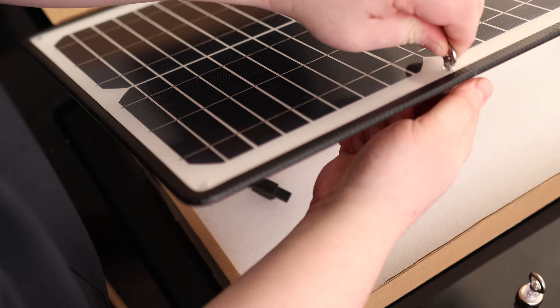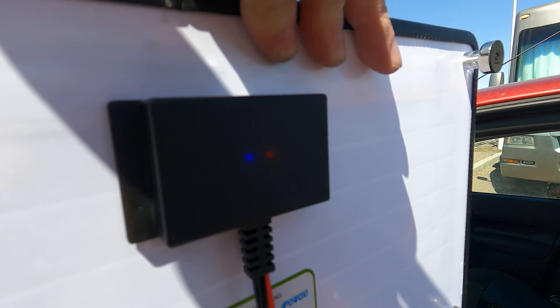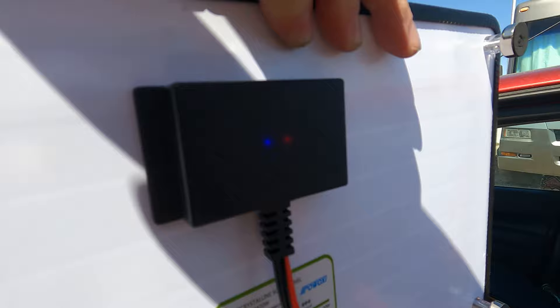Let's go ahead and plug that guy in and see how it works. We got positive to positive and negative to negative. Kind of hard to see, but we got a blue light and a red light. Blue means it's under the sun, so it's getting a charge. Red means it's charging. If it was green, that would mean it's fully charged.